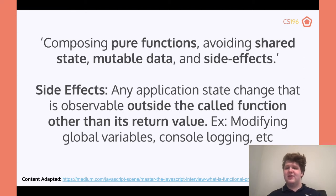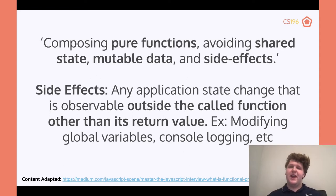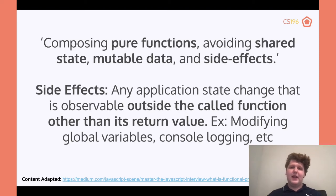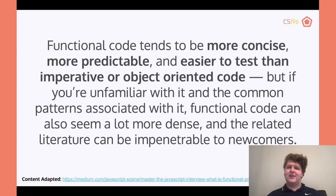A side effect is any application state change that's observable outside the called function other than its return value. This would be something where you have a birthday method — you return the age, but you're also going to age up the class. That is a shared state, so you're going to run into an issue because it's having unintended side effects. Functional code is usually more concise, more easy to predict because there are no unintended side effects, and it's easier to test than imperative or object-oriented code.